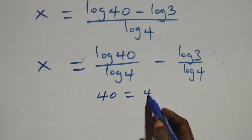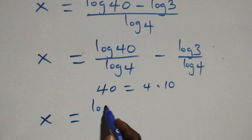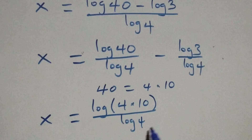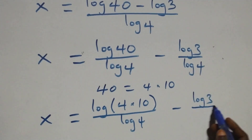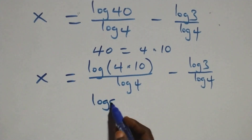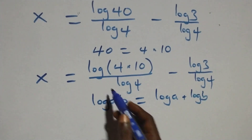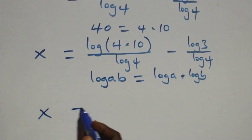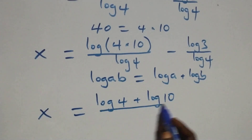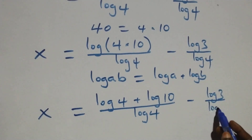From here, we can write 40 as 4 times 10. This also follows the law of logarithms: log(a times b) is the same as log A plus log B. So this becomes x equals to log 4 plus log 10 over log 4, minus log 3 over log 4.